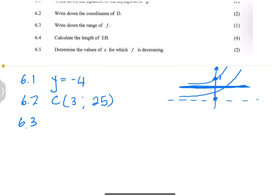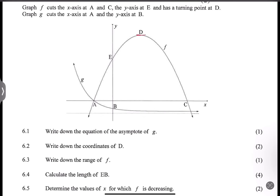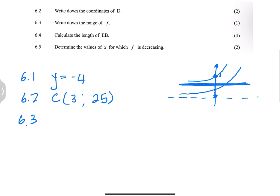They say write down the range of F. The range is where the graph exists in the Y-coordinates. The highest Y value is at the turning point, which is 25. So the range is y ∈ (-∞, 25], or equivalently y ≤ 25.